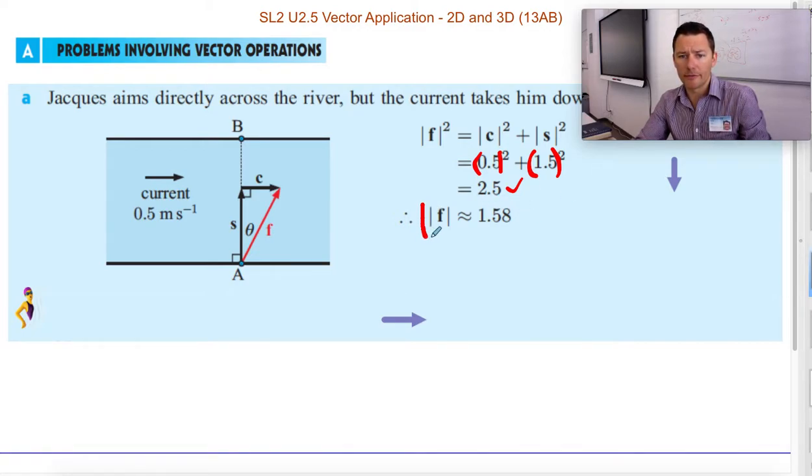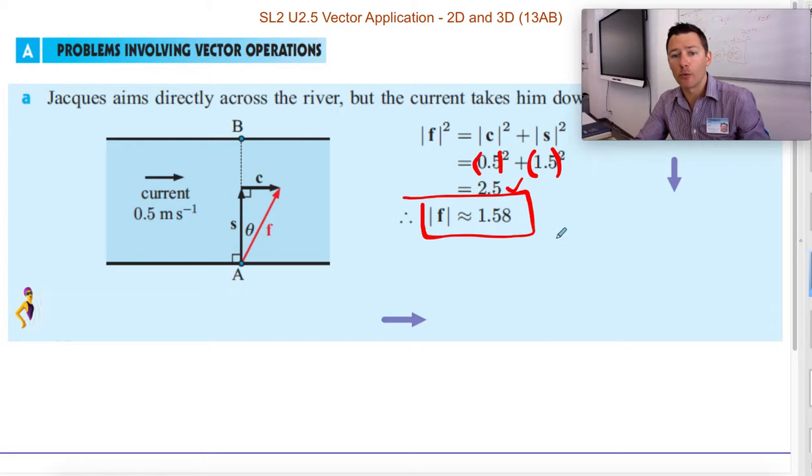So after you take the square root, then 1.58 is her overall speed. And that makes sense because she's getting some extra speed over ground because of this current pushing her a little bit.